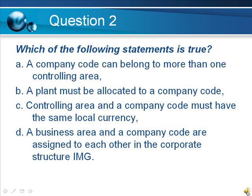Question 2. Which of the following statements is true? A. A company code can belong to more than one controlling area. B. A plant must be allocated to a company code. C. A controlling area and a company code must have the same local currency. D. A business area and a company code are assigned to each other in the corporate structure IMG.